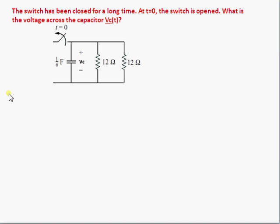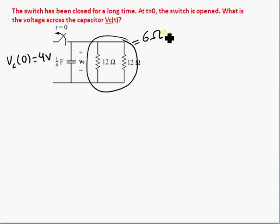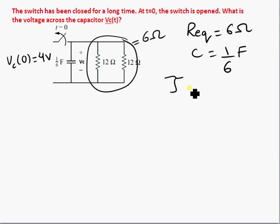In this case we have the voltage of the capacitor at t equals 0 is equal to 4 volts. Now the capacitor, we saw just a second ago that this is equal to 6 ohm, so we have a total of 6 ohm resistor. Equivalent resistor is 6 ohms. Capacitor is 1 sixth of a farad, so that means the time period tau is equal to R equivalent times C, which is 6 times 1 sixth equals 1 second.